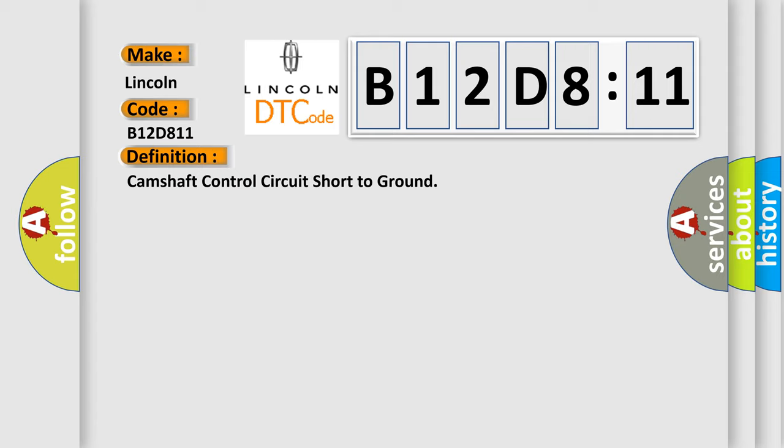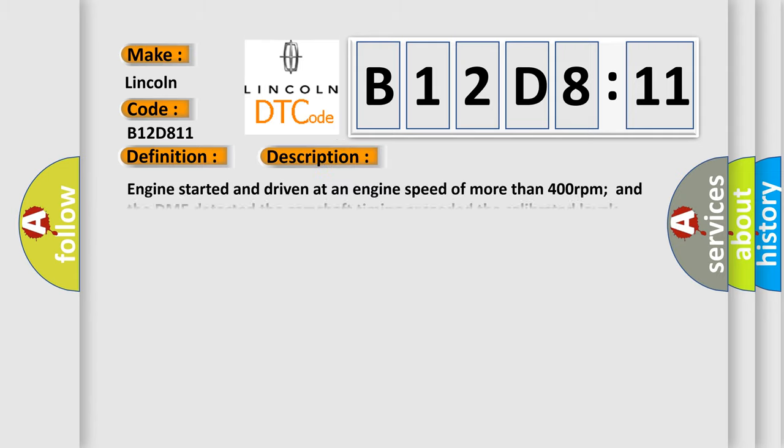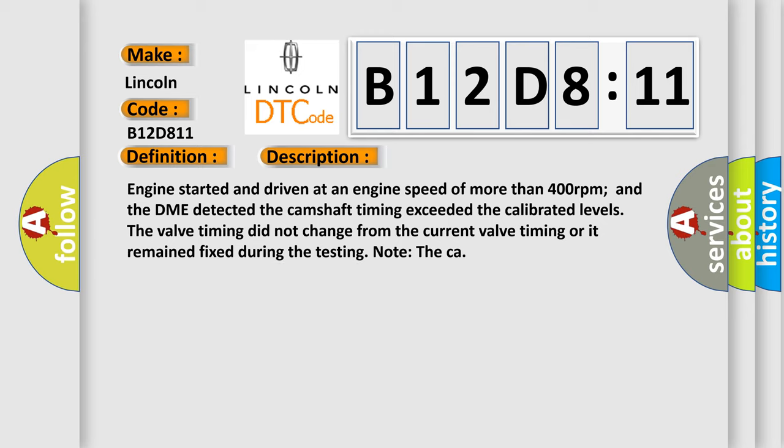And now this is a short description of this DTC code. Engine started and driven at an engine speed of more than 400 revolutions per minute and the DME detected the camshaft timing exceeded the calibrated levels. The valve timing did not change from the current valve timing or it remained fixed during the testing.